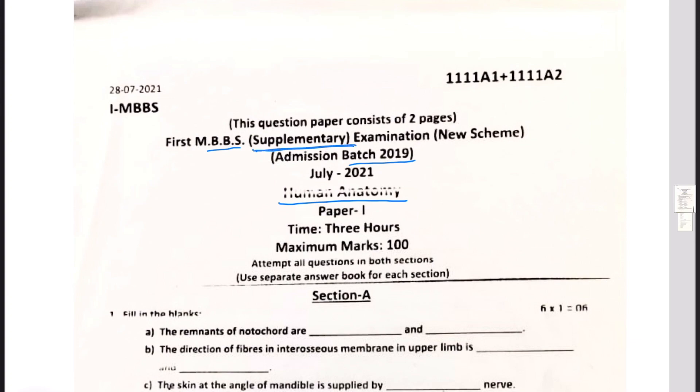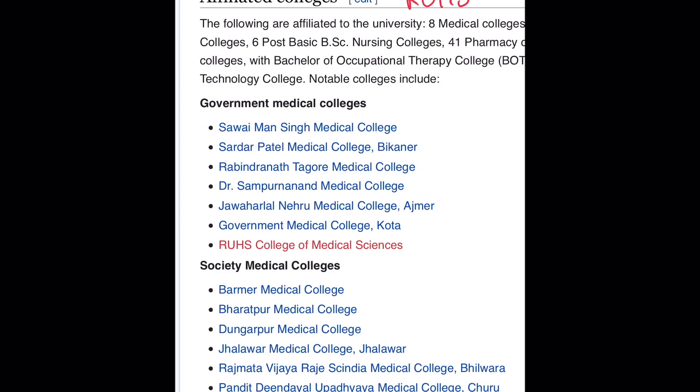So let me tell you a brief description about this RUHS, that is Rajasthan University of Health Sciences. It's a big university, it encompasses most of the medical colleges in Rajasthan. Some of them are government medical colleges and some are in the society medical colleges.